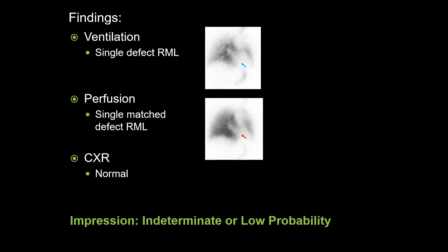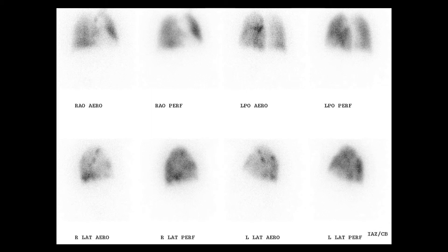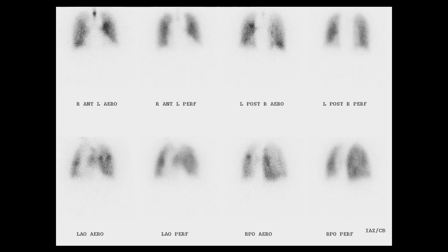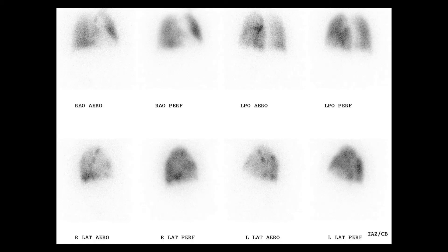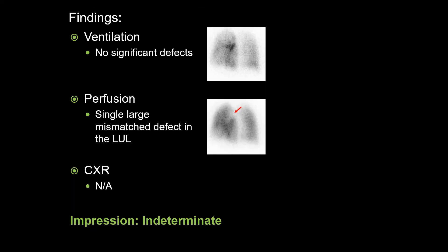Again, for those interested, these findings can also classify as low probability. There are two image slides associated with this next case, and both display DTPA ventilation and perfusion images in multiple projections side by side. There is no comparison chest radiograph. The images demonstrate a somewhat difficult to see single large mismatched perfusion defect involving the left upper lobe that is best seen on the LPO projection. The constellation of findings are neither characteristic of PE present or PE absent, classifying this study as indeterminate.